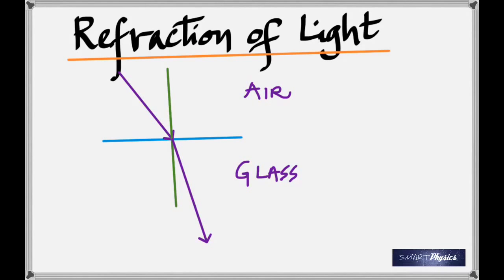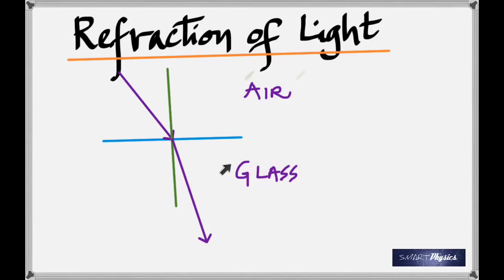What you see on the screen is an incident ray, the normal or perpendicular drawn to it, and the surface separating the two materials — air and glass. The light ray was supposed to go straight, but you can see how it bends towards the normal because it's going from a less dense medium to a more dense medium. If it was going the other way, it would bend away from the normal. If it goes from less dense to more dense, it bends towards; from more dense to less dense, it bends away.